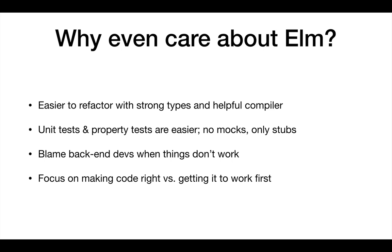Unit tests and property tests are easy to write in Elm because you don't have any mocks. If there are no side effects, you're literally just testing functions — giving a function an input and testing the return value. Property tests send hundreds of random inputs at a function per second. You only have to write one test and it generates the rest for you. It's really good for data validation.